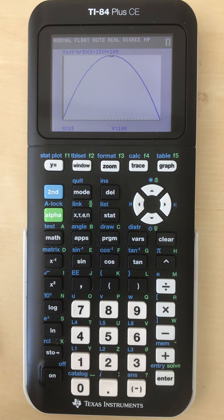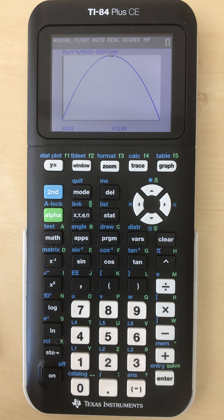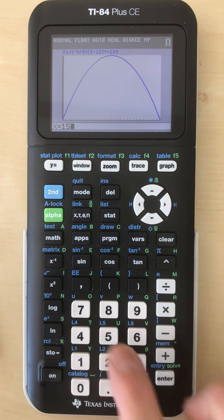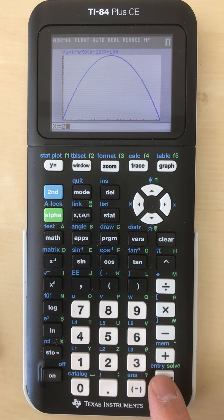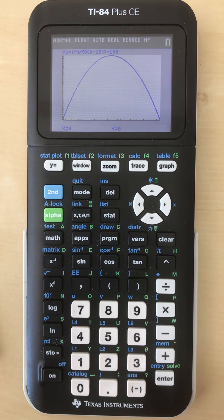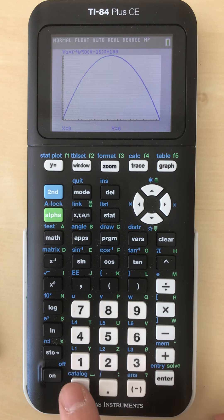The vertex is at (15, 100), so x equals 15, y equals 100 - perfect. The y-intercept is at zero, so x equals zero, y equals zero - indeed. X-intercepts at (0, 0).